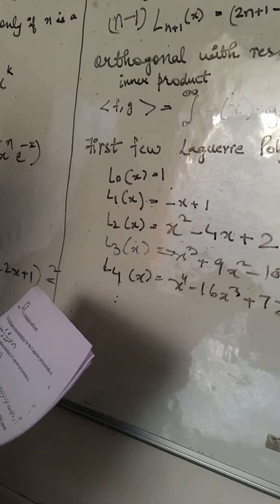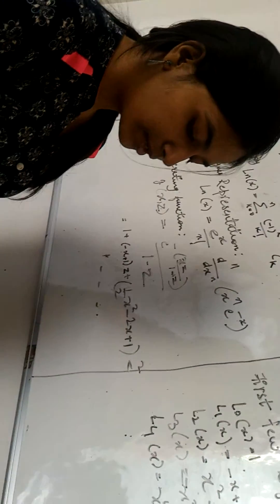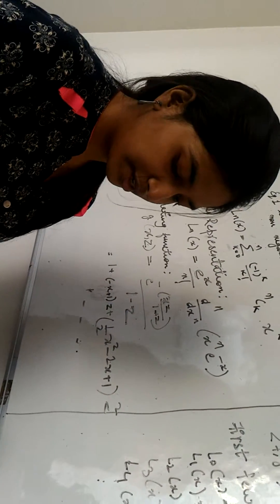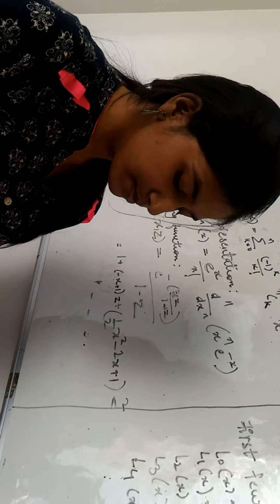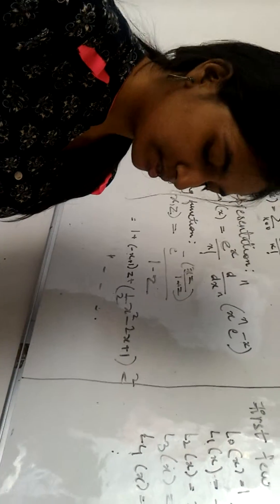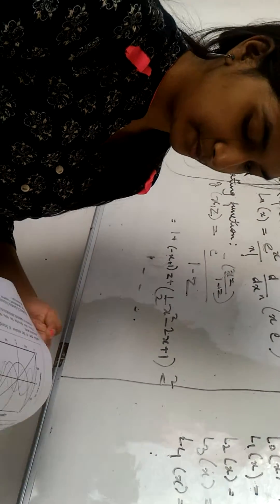Coming on to the applications of Laguerre polynomials, they arise in quantum mechanics in the radial part of the solution of the Schrödinger equation for one electron atom. And they also describe the static Wigner functions of oscillator systems in quantum mechanics in phase space.